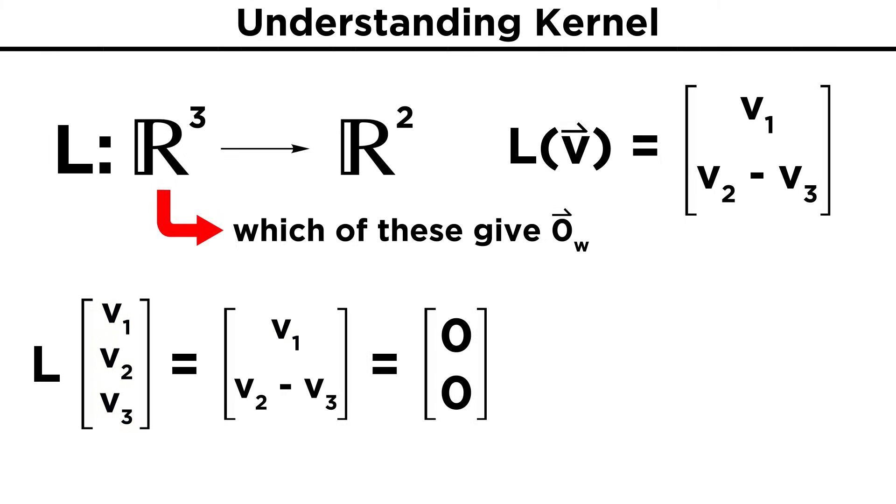In this case that will be as follows: V₁, V₂ minus V₃ equals zero zero. This reduces to a simple pair of equations, V₁ equals zero, and V₂ minus V₃ equals zero. Solving these gives us V₁ equals zero, and V₂ equals V₃.